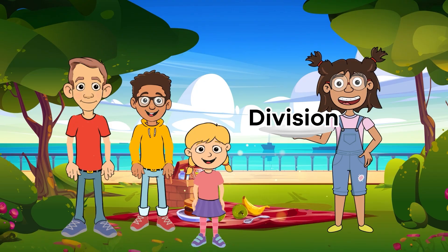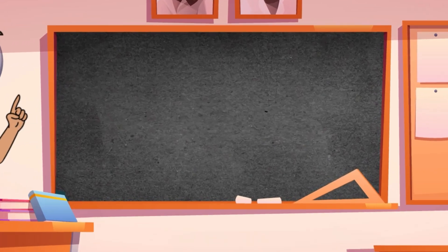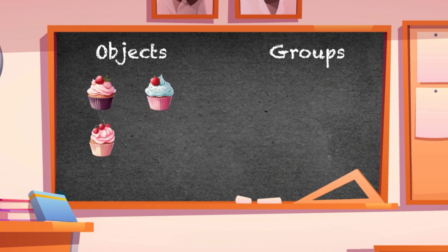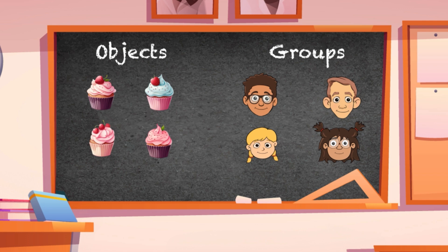So how do you figure out how many cupcakes each person gets? By division, of course. First, we have to figure out what the number of objects and groups are. The objects are the cupcakes, and the groups are you and your friends. An important rule to remember is that when you write a division problem, you always put the objects first. In this case, the objects are the cupcakes.